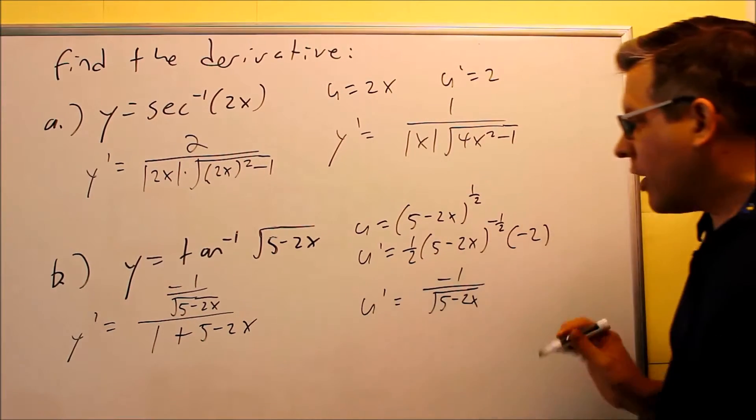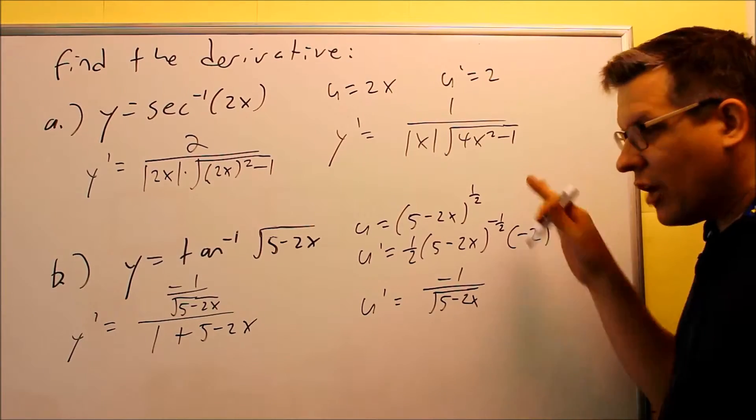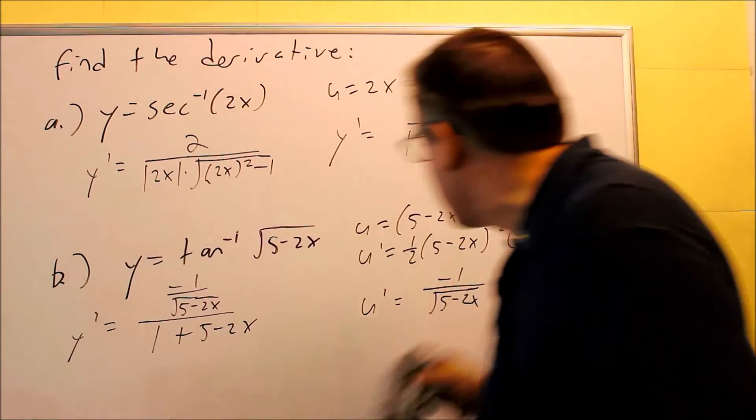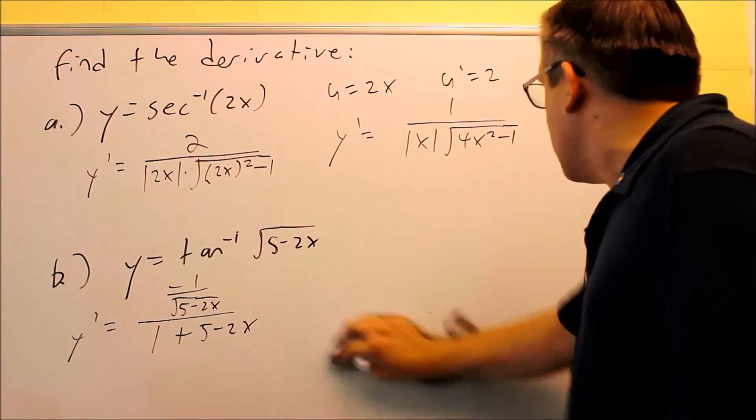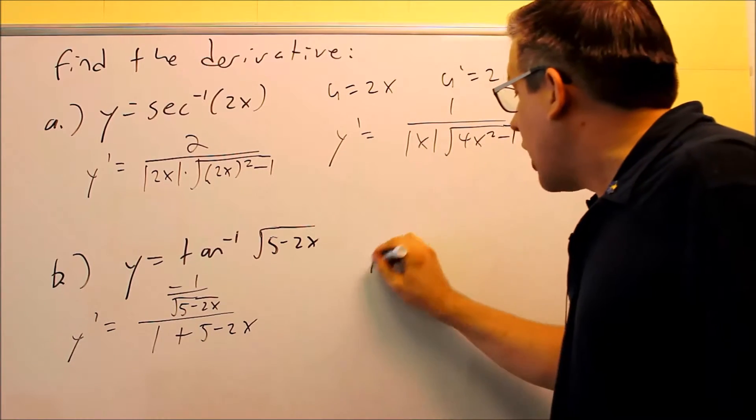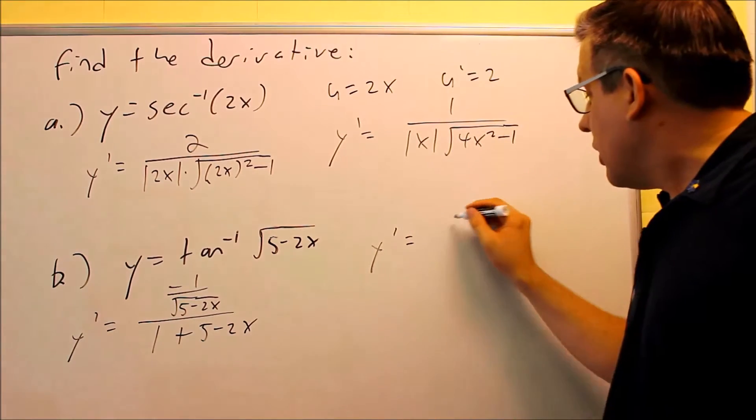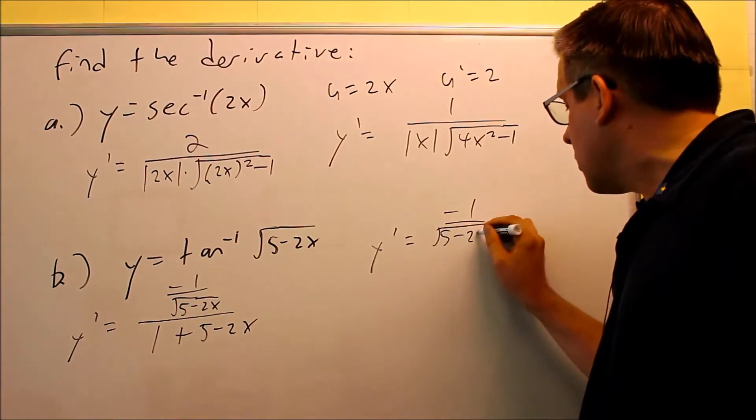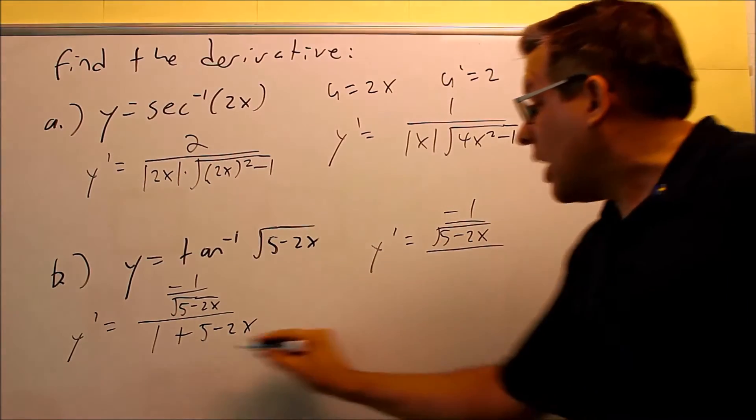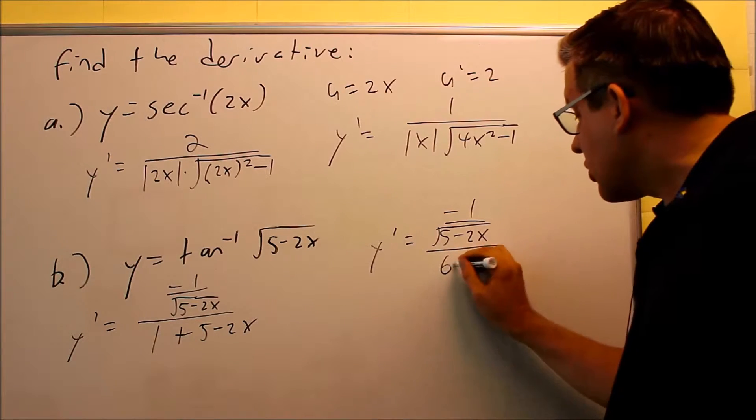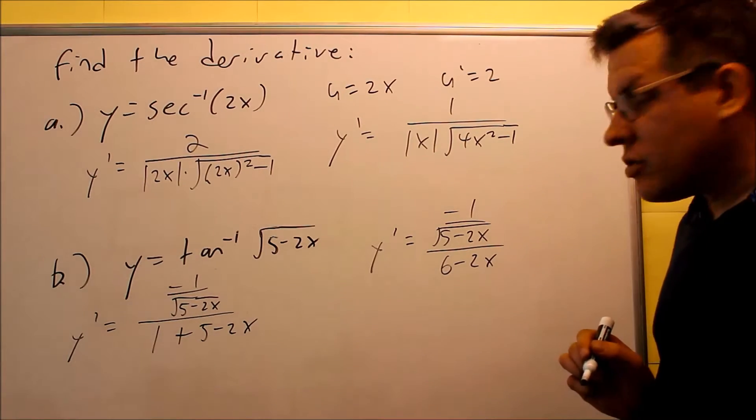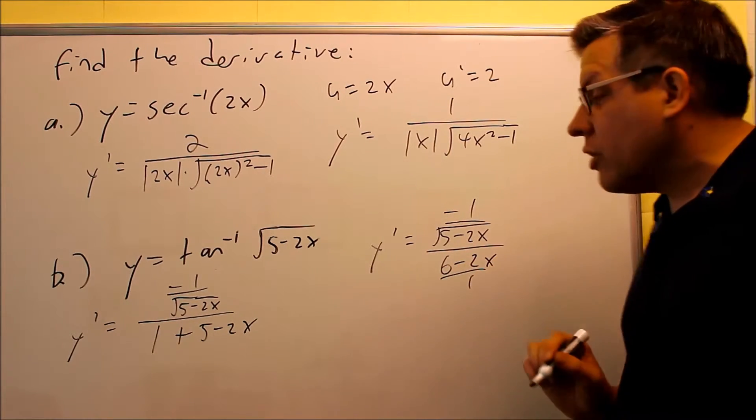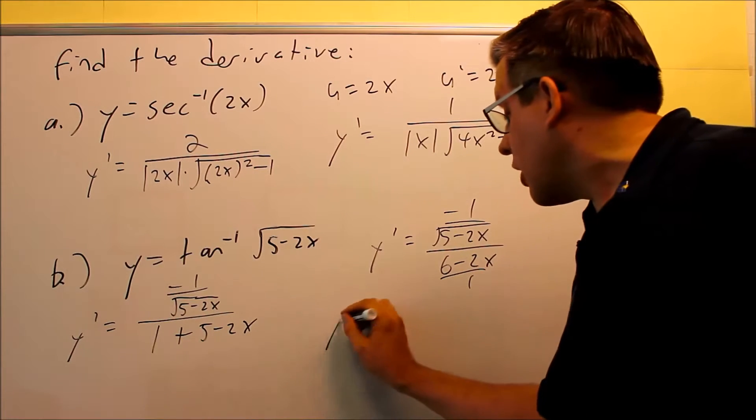And of course we can do some simplifying. I'm going to erase that so we have some space to continue the problem. So y-prime, we're going to do negative 1 over the square root of 5 minus 2x. On the bottom, I want to simplify this. I get 6 minus 2x. We can write this over 1, which means we can flip the fractions to get our final answer.